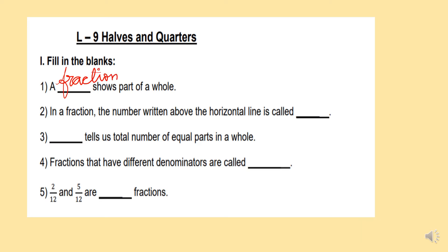Question 2. In a fraction, the number written above the horizontal line is called the numerator. Correct.